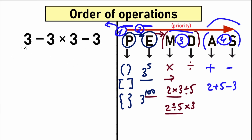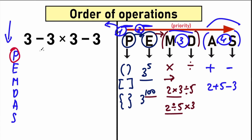Every time you have this type of question, write this PEMDAS checklist on the left side and go from top to bottom. The first step is to scan for parentheses — obviously, we don't have any parentheses, so we can easily skip this part. What about E — exponents? As I said before, we don't have any squares or cubes, so we can easily skip this part as well. We don't have exponents.